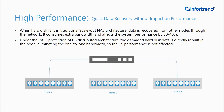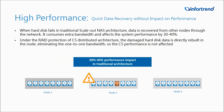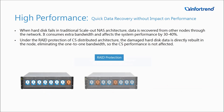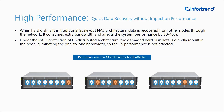The next advantage is high performance. The traditional scale-out NAS architecture will be reconstructed through other nodes when the hard disk is damaged. The purpose of this reconstruction loop is to find the computing data from each node through the network to rebuild damaged data, and such a process will cause a lot of additional overhead, which will have a 30% to 40% impact on performance. In the CS architecture, performance is almost not affected, because when a hard drive is damaged, the data written on it will be directly calculated and reconstructed inside the node, eliminating the one-to-one bandwidth, so the CS system can be highly efficient.